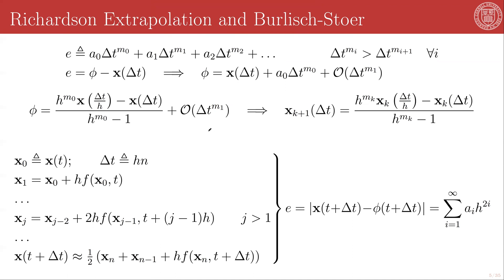As an example, let's say x, your state, evaluated at Δt, is an approximation of the true solution φ, where Δt > 0, and we have an error definition as follows. e = a summation of some constant A_0 times Δt^{m_0}, plus A_1 times Δt^{m_1}, plus A_2 times Δt^{m_2}, and so on.